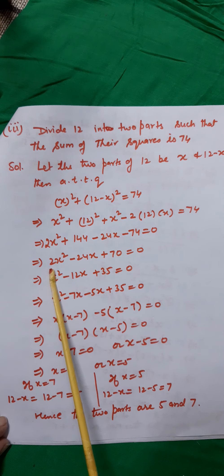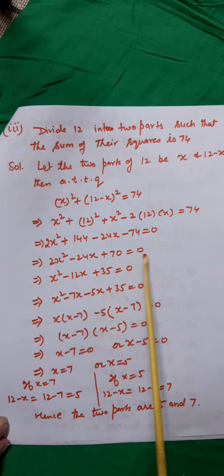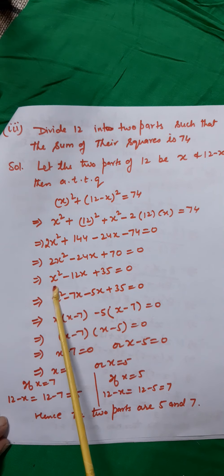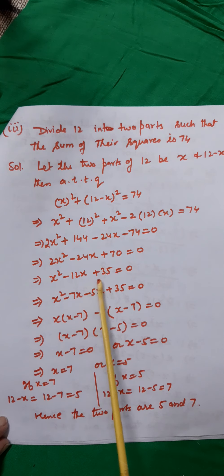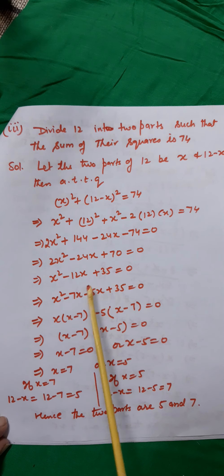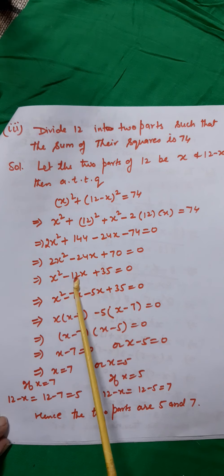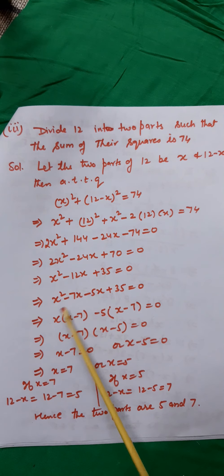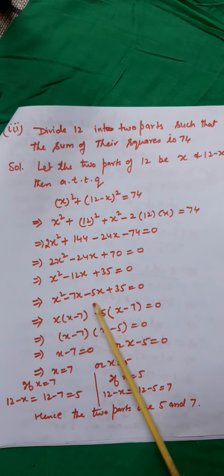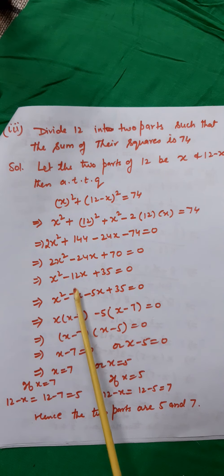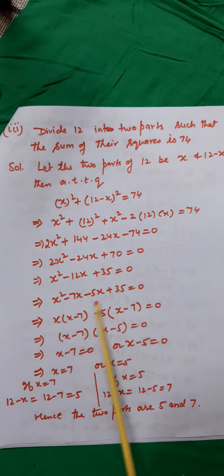Solving further: 2x² − 24x + 70 = 0. I notice 2 is a common factor of all terms, so dividing by 2 gives x² − 12x + 35 = 0. Now I break −12 into two parts whose product is 35 and sum is −12. Those numbers are −7 and −5, since (−7) + (−5) = −12 and (−7)(−5) = 35.